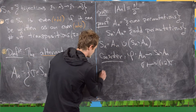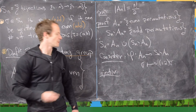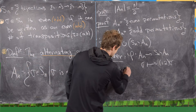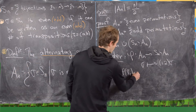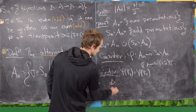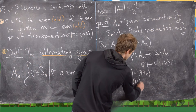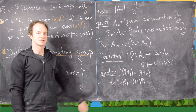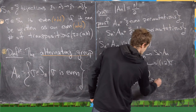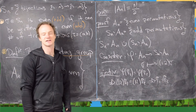First we show φ is injective. Suppose φ(sigma_1) = φ(sigma_2). Then (1 2)·sigma_1 = (1 2)·sigma_2. We can multiply both sides on the left by the transposition (1 2), and since (1 2)² = identity, that gives us sigma_1 = sigma_2. So φ is injective.